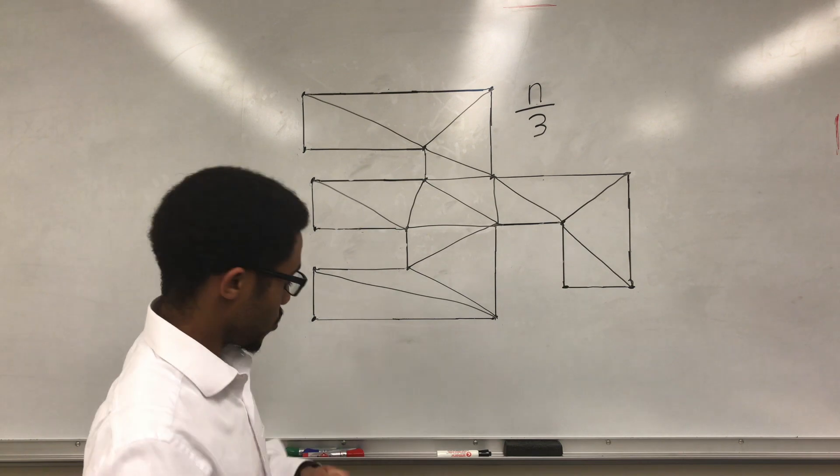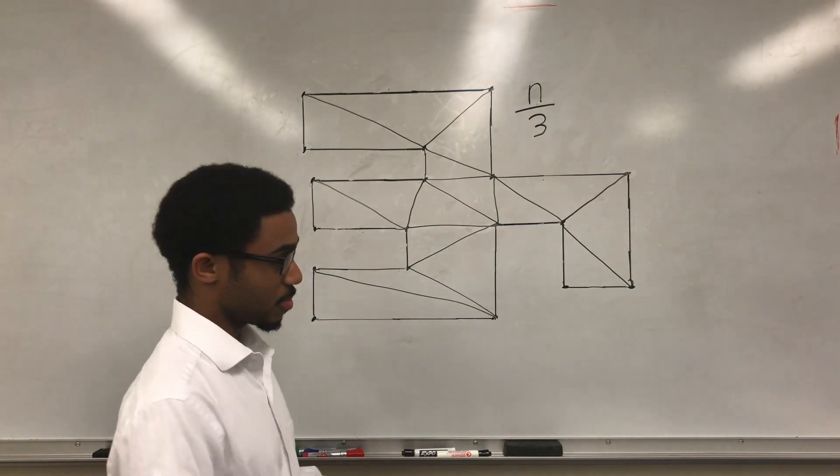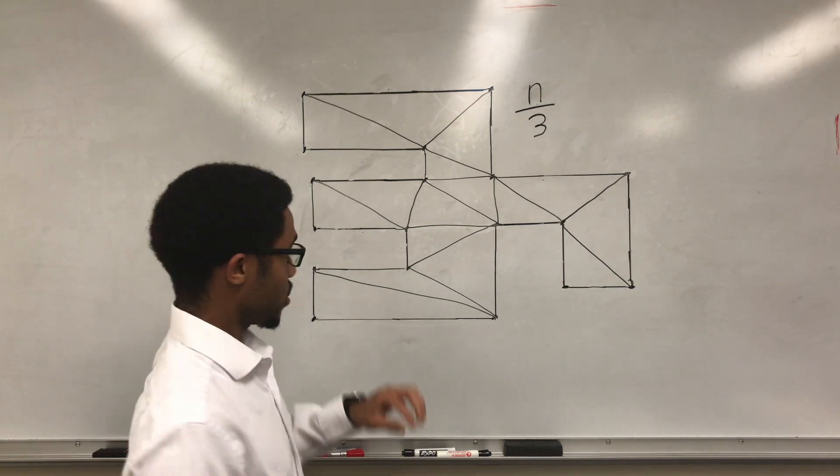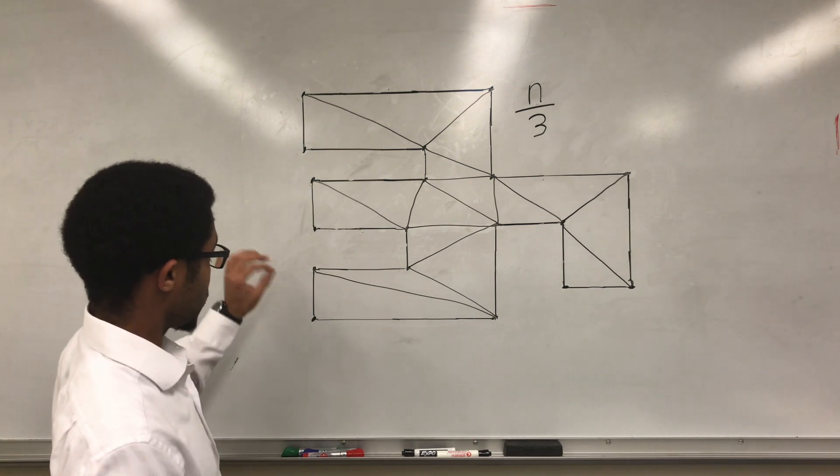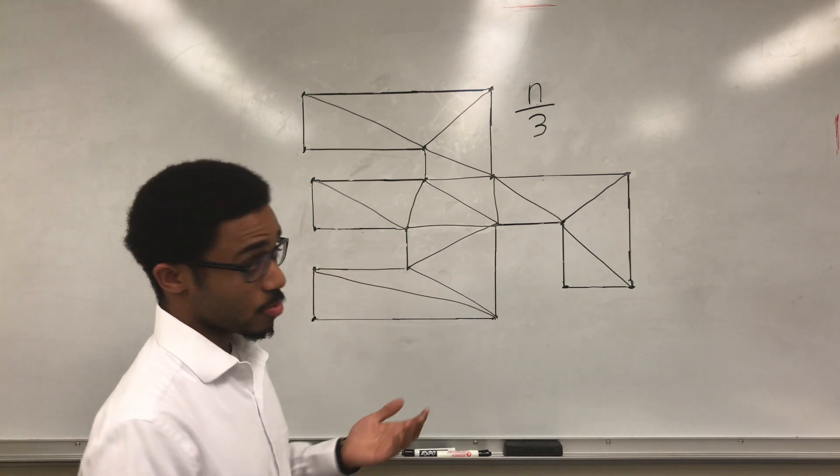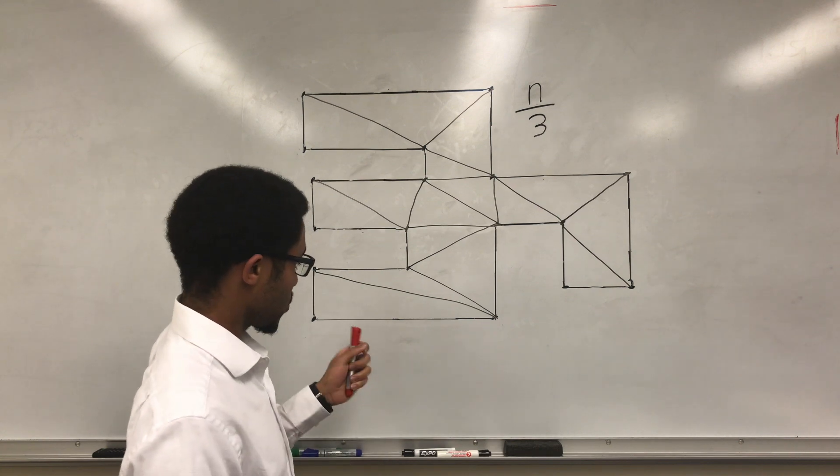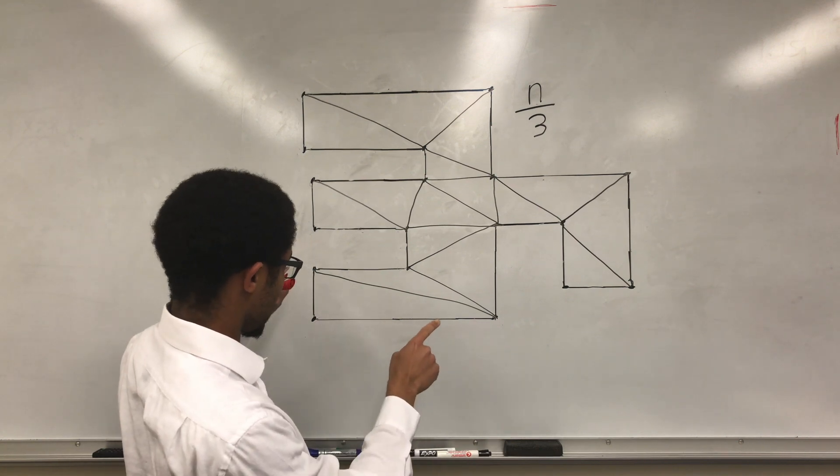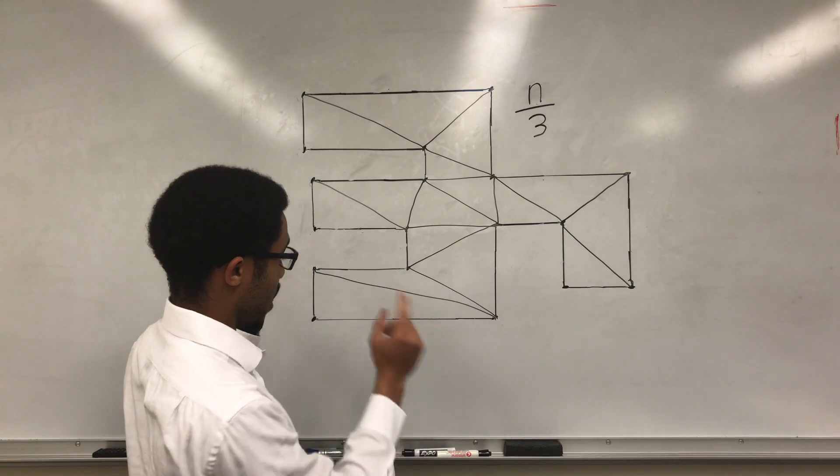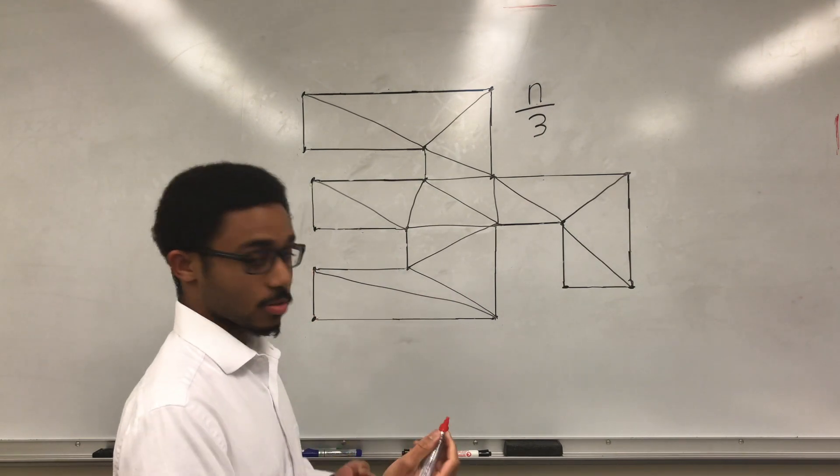Then next, we'll use a graph theory concept known as chromatic coloring to color every vertex in the polygon. Chromatic coloring is when we color each vertex so that no two vertices connected by a line have the same color. Let's start with the red.